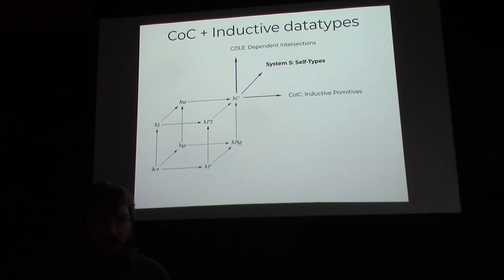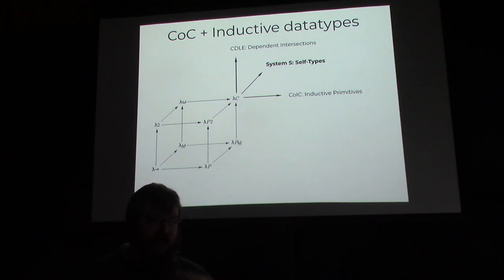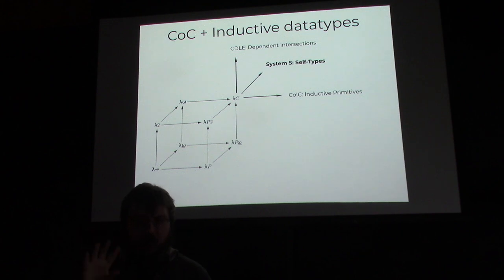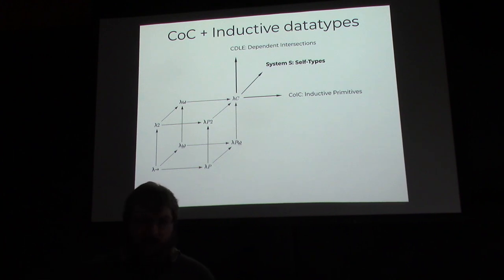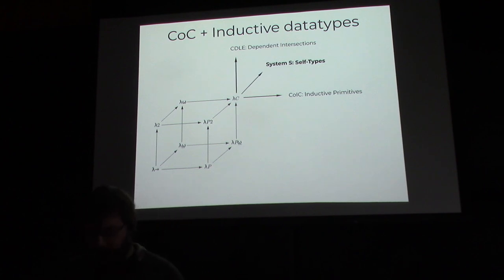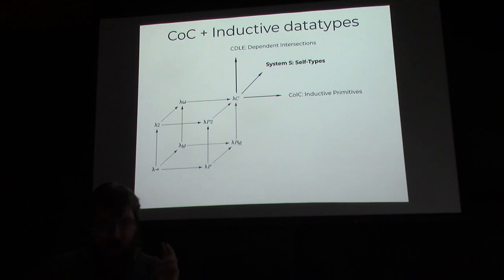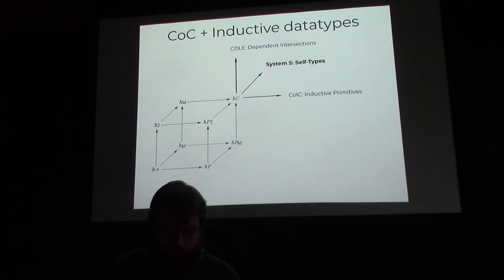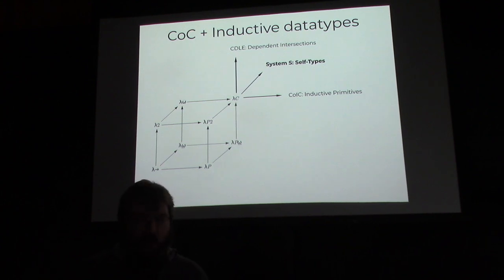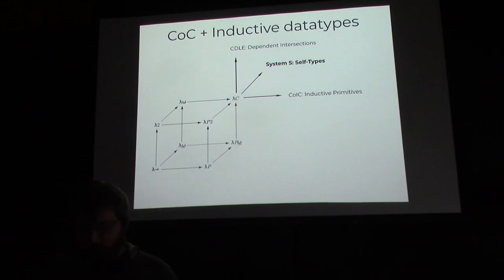Here are three different options for doing inductive data types. The Calculus of Inductive Constructions (CIC) is the standard — pretty much every mature proof language uses this. It takes the Calculus of Constructions and adds primitives, so for bool and list you add a construct for each. It's very complicated — if you can do CoC in maybe 500 lines of code, it might take several thousand to implement inductive data types as primitives.